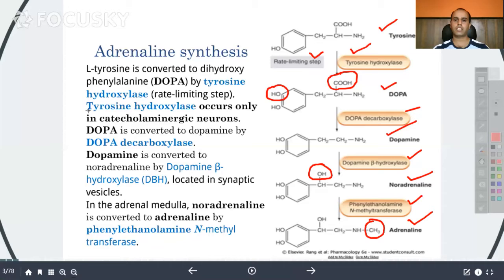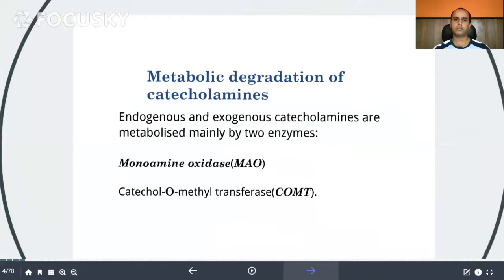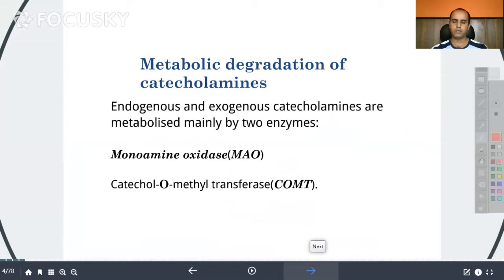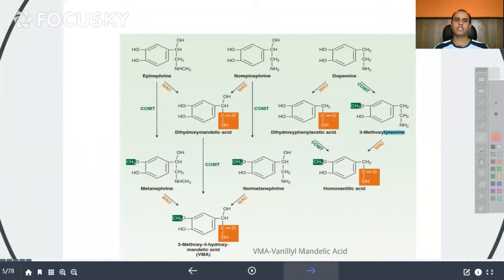Now let us look at the metabolism. The metabolic degradation of catecholamines involves two main enzymes: the first is monoamine oxidase (MAO), and the second is catechol-O-methyltransferase (COMT). Both endogenous and exogenous catecholamines are metabolized by these two enzymes. Let us have a look at various neurotransmitters and the action of MAO and COMT on them.